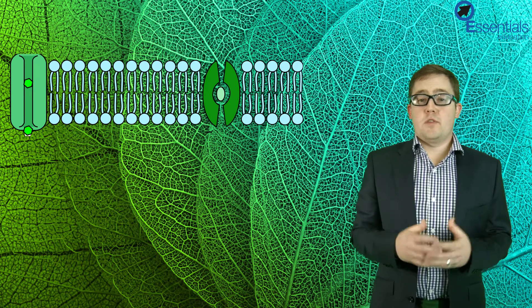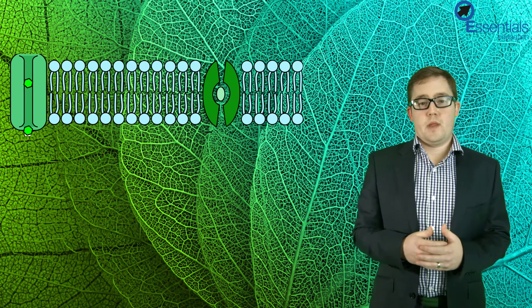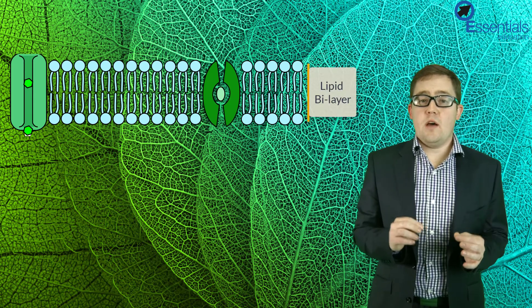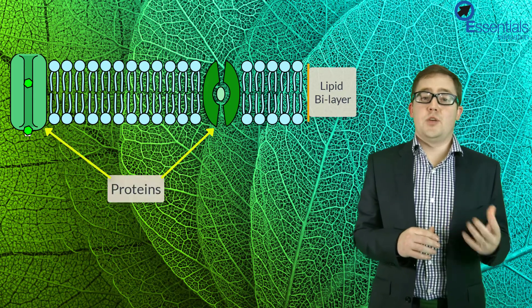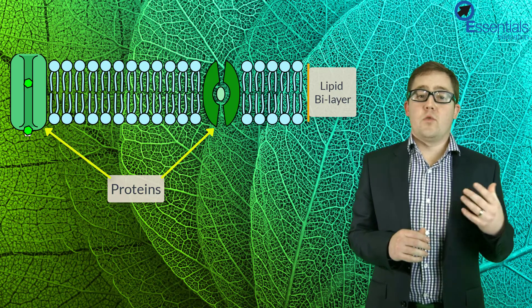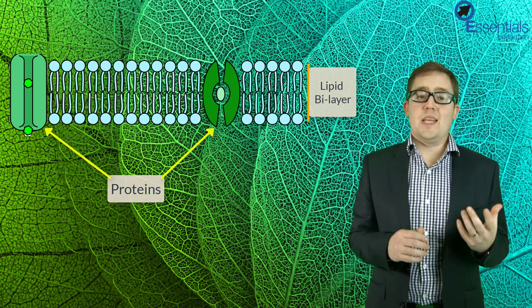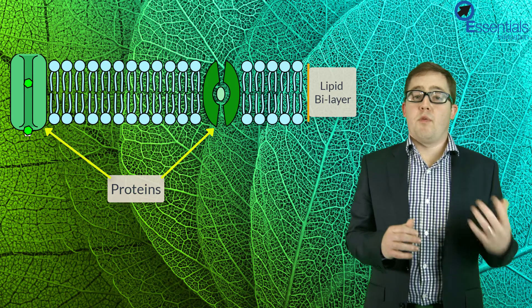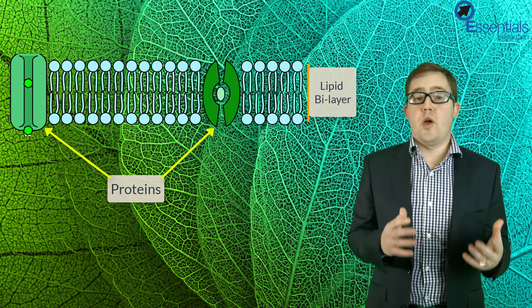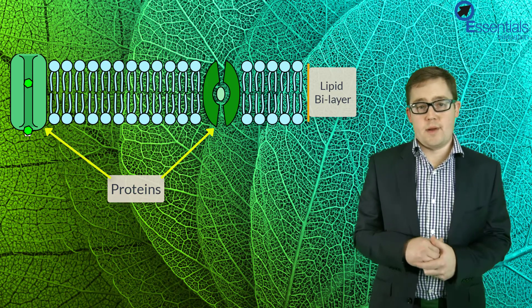The cell membrane structure is very important to its function. Cell membranes consist of two layers called a bilayer of phospholipid molecules and two different types of membrane proteins. One is called integral proteins, which are permanently in the bilayer, and peripheral proteins, which tend to move in and out temporarily and are not a permanent part of the membrane. There are also a host of other types of molecules which embed themselves in the membrane, which we will not feature in this video.